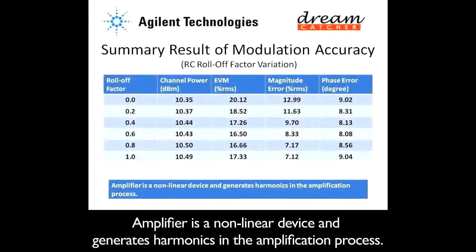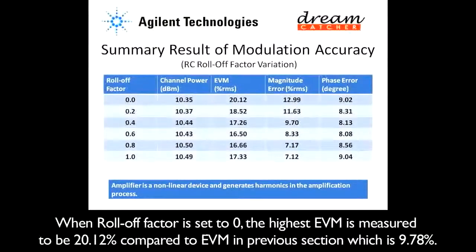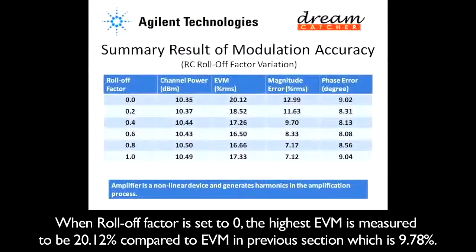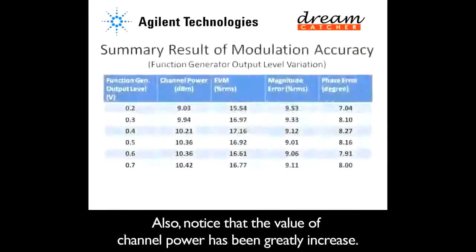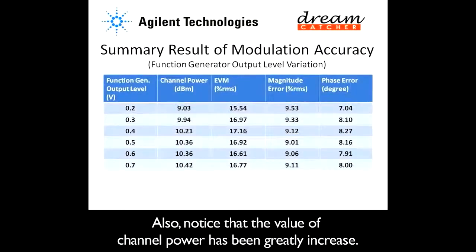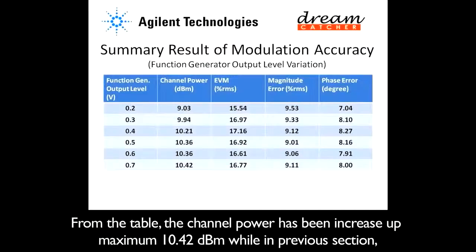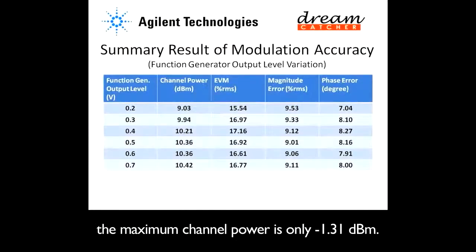The amplifier is a non-linear device and generates harmonics in the amplification process. When the roll-off factor is set to zero, the highest EVM is measured to be 20.12%, compared to 9.78% in the previous section. Also notice that the channel power has been greatly increased — up to a maximum of 10.42 dBm, while in the previous section the maximum channel power was only -1.31 dBm.